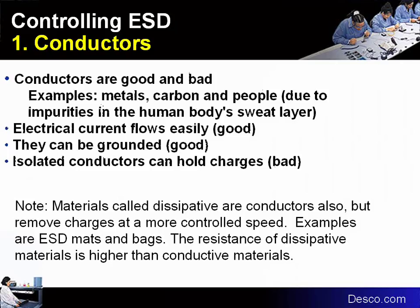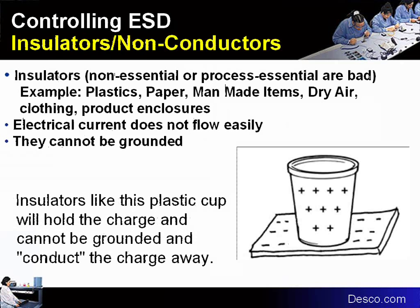Controlling ESD, we need to consider two different items potentially at a workbench: conductors and insulators. Conductors — such as metals, some carbon devices, and people — allow electrical current to flow easily and can be grounded, but if not connected to ground they can become isolated conductors and hold a charge. Insulators or non-conductors — like plastic, paper, clothing, and non-metal product enclosures — are items that electrical current does not flow easily through and cannot be grounded. Items like plastic cups or water bottles cannot conduct a charge away.